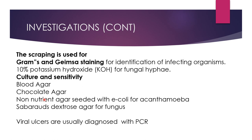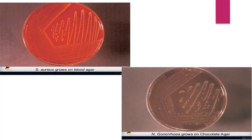Material is also used for culture and sensitivity. Different culture media include blood agar, chocolate agar, non-nutrient agar seeded with dead E. coli, and Sabouraud's dextrose agar. Blood and chocolate agar are used in every case to detect the majority of bacteria. Sabouraud's dextrose agar is used to culture fungi, and non-nutrient agar seeded with dead E. coli is used for Acanthamoeba. Viral ulcers are diagnosed with PCR — polymerase chain reaction — which is specific for identifying different strains of virus.